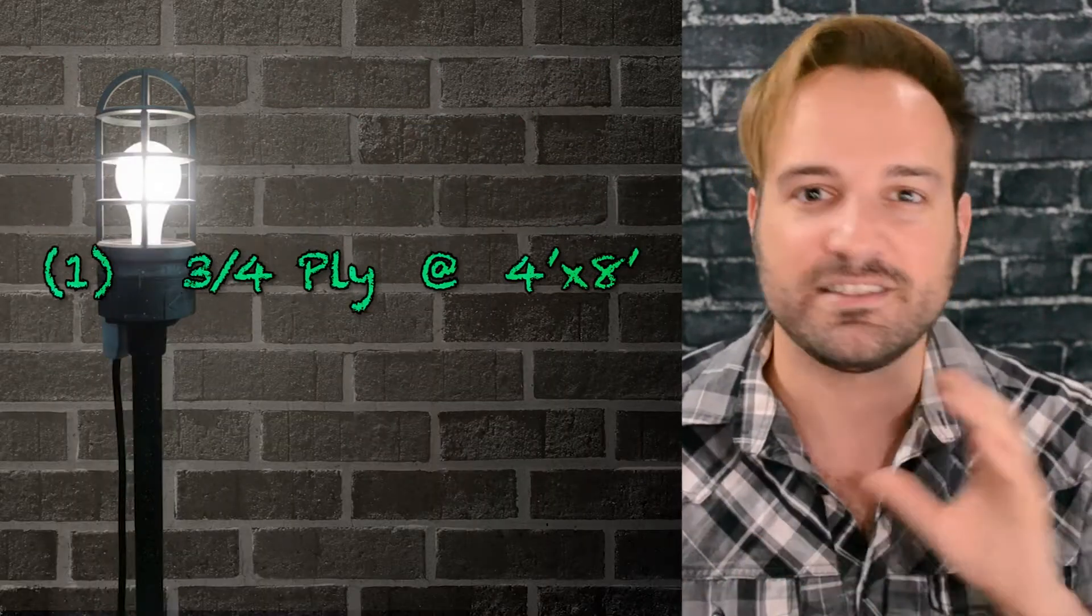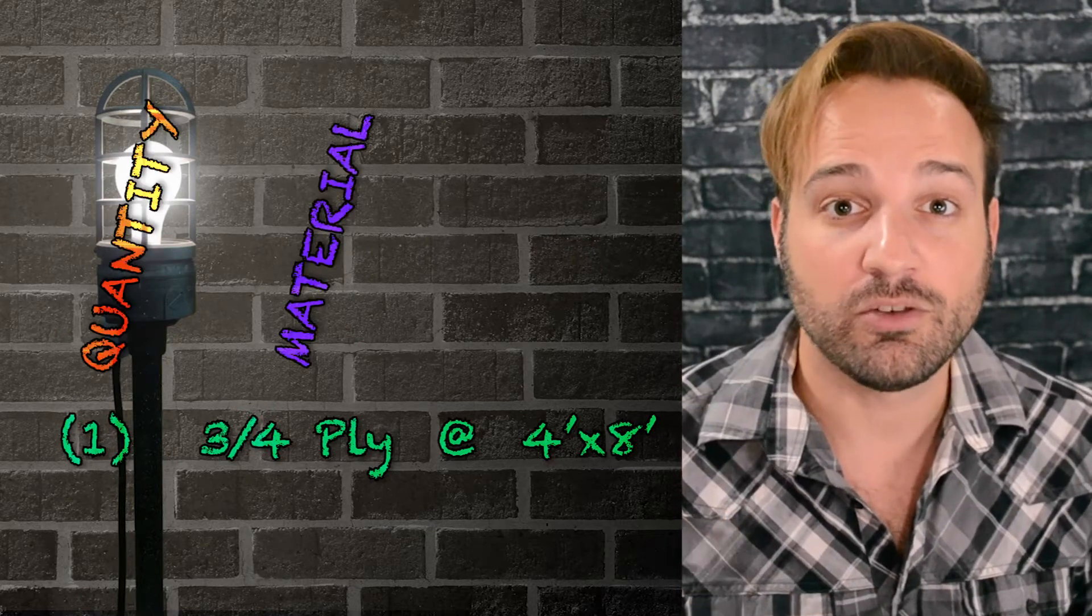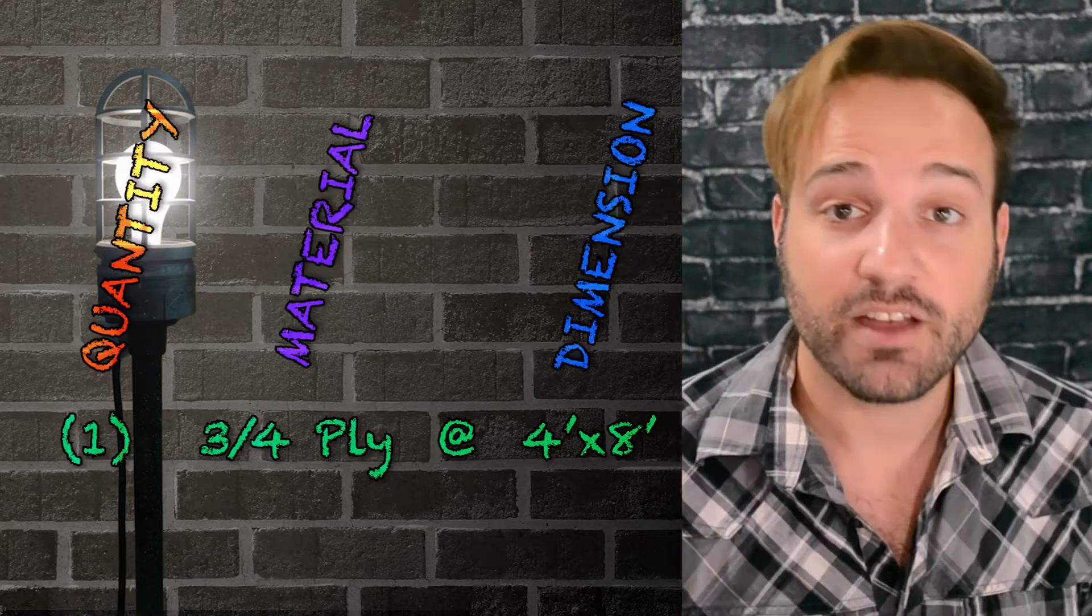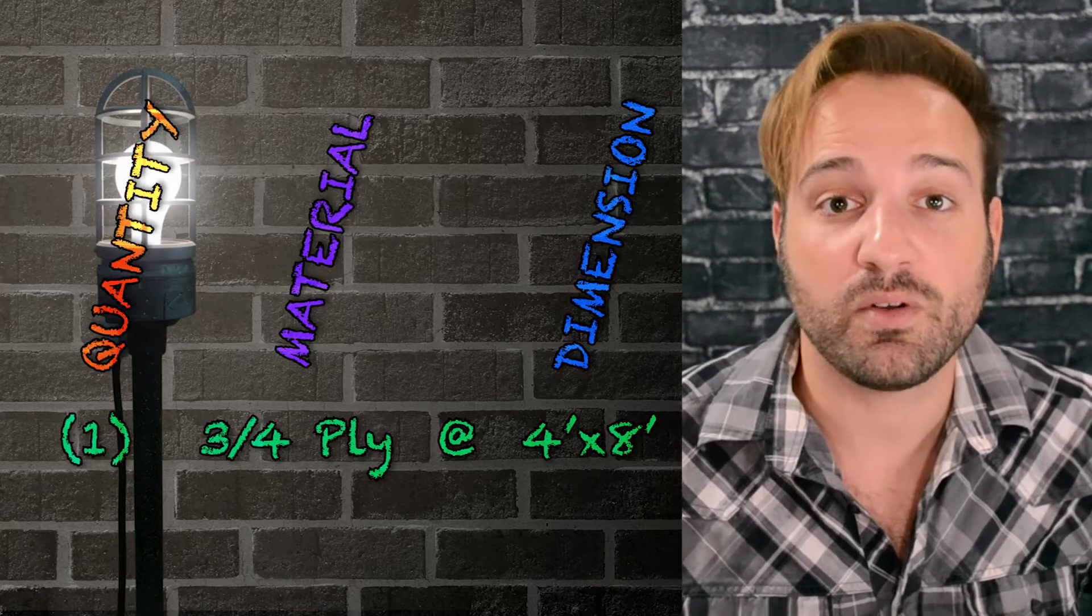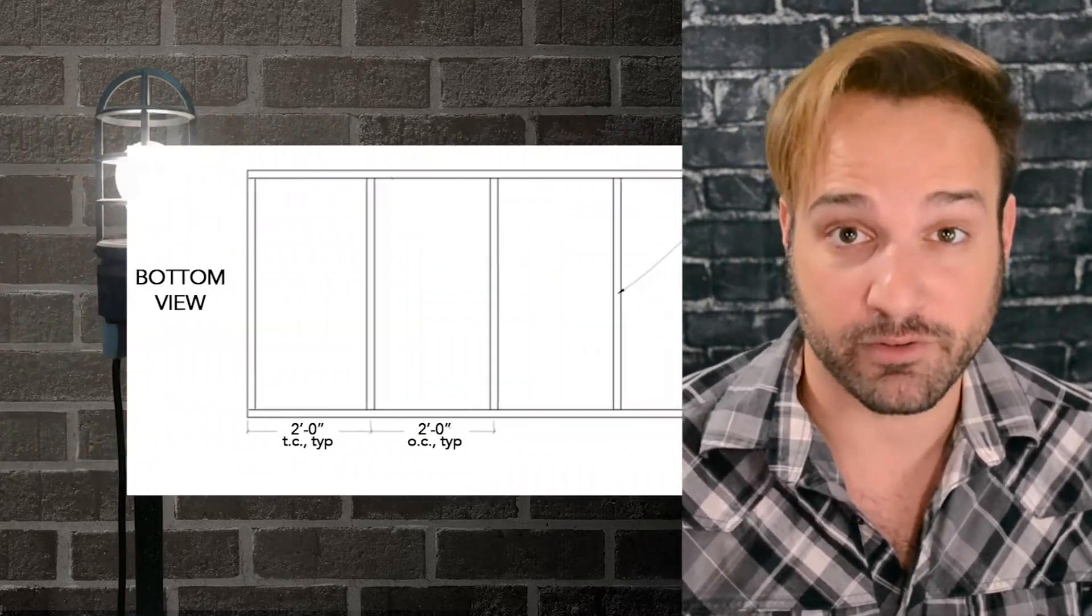Now, the order of these columns doesn't necessarily make a difference, but if you're making a list, you want everything in the column to stay the same. So, now that we have the lid, let's go into our actual bracing. This, we're going to look at our bottom view for.